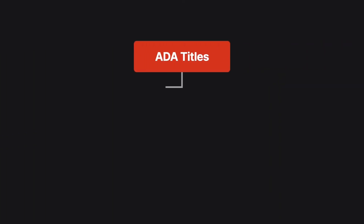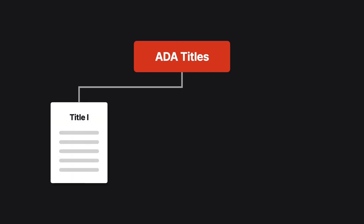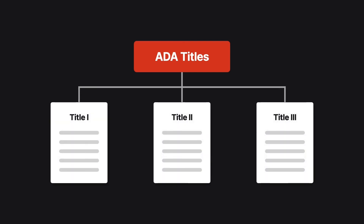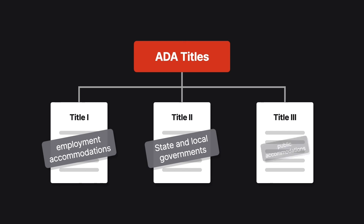The ADA is divided into five titles, three of which we will focus on in this brief overview. We're going to talk about employment, which is Title I; government services, which is Title II; and public accommodations, which is Title III. Title I requires covered employers to provide reasonable accommodations for applicants and employees with disabilities, and it prohibits discrimination on the basis of disability in all aspects of employment.